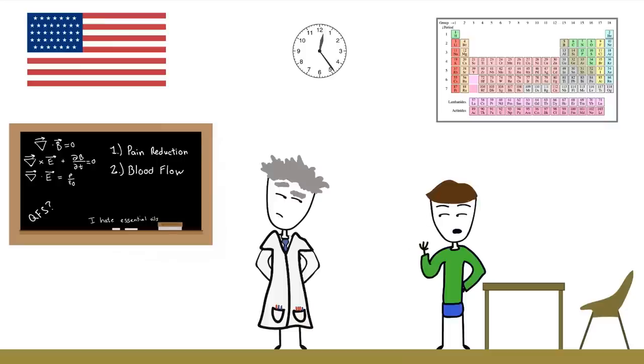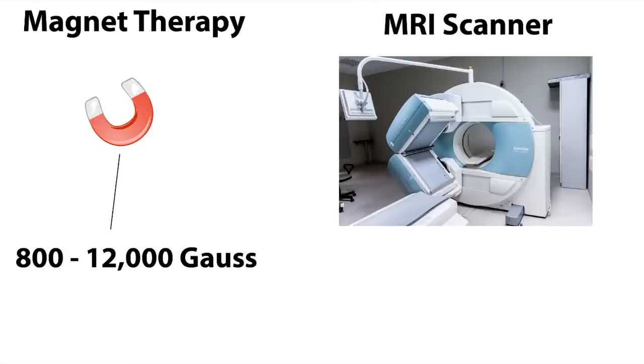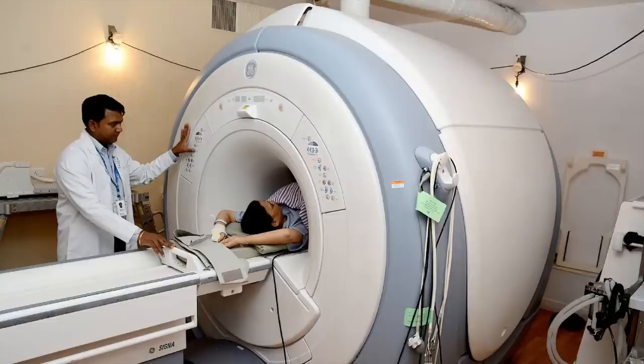Yeah, but what about a really, really powerful magnet? Well, the Gauss rating of a typical static magnet used for therapy is between 800 and 12,000 Gauss, while magnets using MRI scanners run between 20,000 and 70,000 Gauss. Surprisingly, when people go through MRI scanners, there's no effect on their blood circulation. It's almost as if there's no relation to magnetism and blood flow.